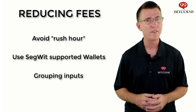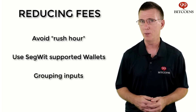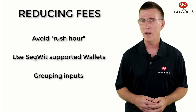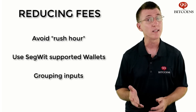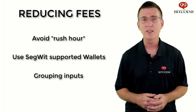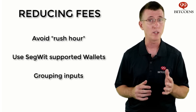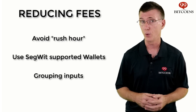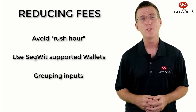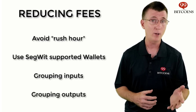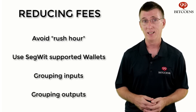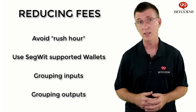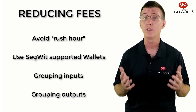Grouping your inputs is a more advanced method for optimizing fees. The more inputs you need to create your transaction, the bigger its size, meaning the more fees you'll need to pay. If you want to keep fees low, every once in a while you can consolidate your inputs by sending many small inputs to an address that you own at a time when fees are low. This way, you will significantly reduce your future fees since you'll only have one input. You can also group multiple outputs, or payments, to one transaction — sending payments to several addresses in one transaction, which will reduce the required fee.